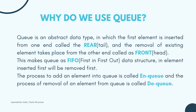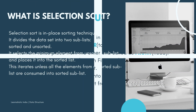Priority queue and breadth first traversal of a graph are some examples of queues. The operations performed on queues are: Enqueue — used to add items to the rear end of the queue. Dequeue — removes the item from the front of the queue. Peek — gives the value of the front item without removing it. Is empty — checks whether the queue is empty or not. Is full — checks whether the queue is full or not.